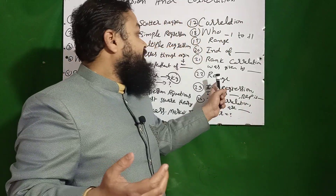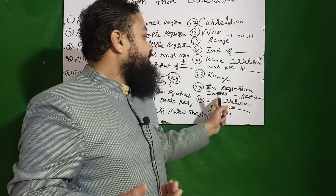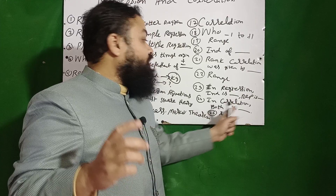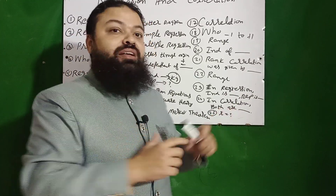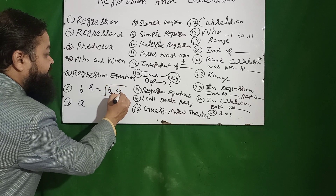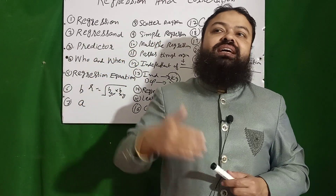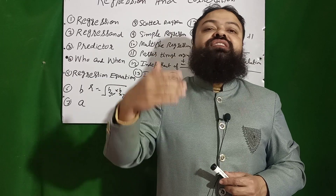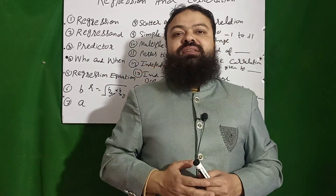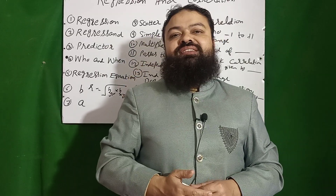Rank correlation was given by Spearman, and its range is the same as the correlation coefficient: minus one to plus one. In regression, the independent variable is fixed while the dependent variable is random; in correlation, both are random. The value of r is always the square root of b_yx times b_xy — the correlation coefficient is the geometric mean of the two regression coefficients. Multiple correlation has a range of zero to plus one, and partial correlation ranges from minus one to plus one. Best of luck for tomorrow's paper — Assalamu Alaikum.